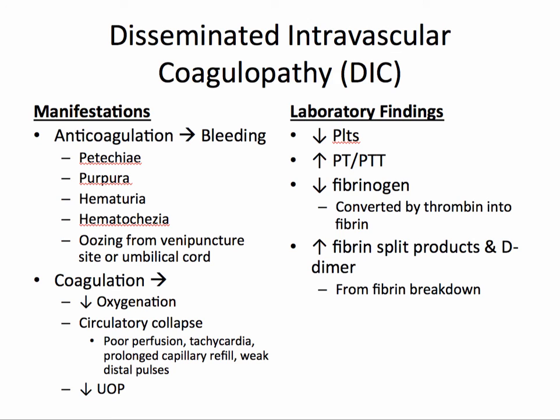On the other hand, coagulation resulting in microthrombi causes decreased oxygenation and circulatory collapse, presenting as poor perfusion, tachycardia, prolonged capillary refill, weak distal pulses, and decreased urinary output. Key laboratory findings include a decrease in platelets, prolongation of the PT or PTT, a decrease in fibrinogen, and an increase in fibrin split products and D-dimer, resulting from fibrin breakdown.